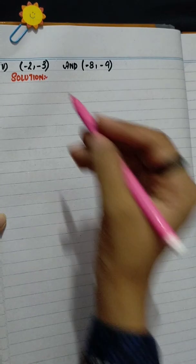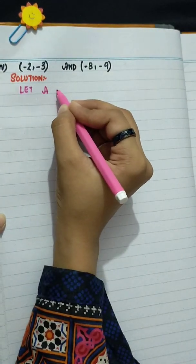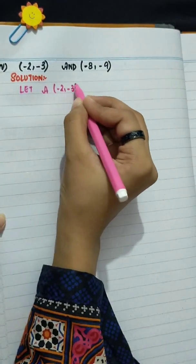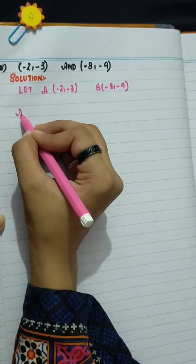Part 4 is minus 2, minus 3 and minus 8, minus 9. Let A be minus 2, minus 3 and B be minus 8, minus 9.